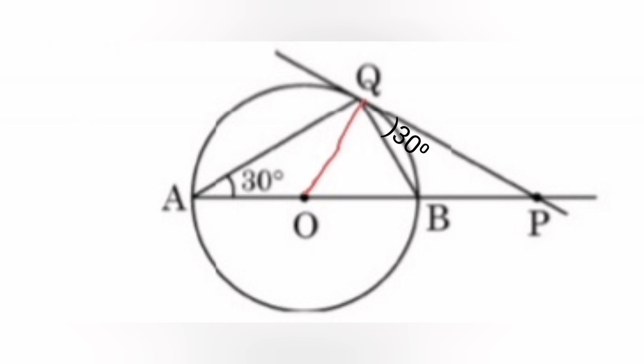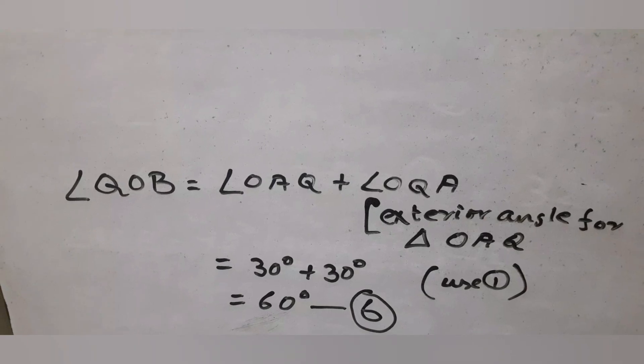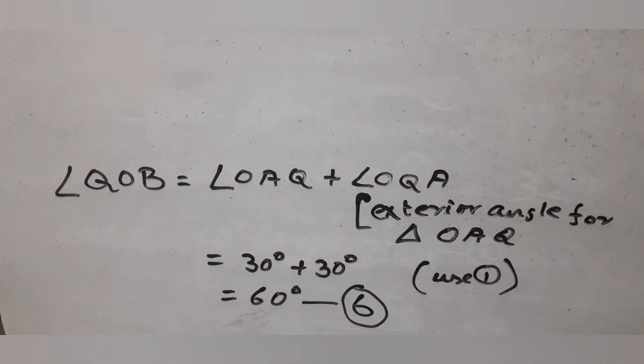We try to find angle QPB. Angle QOB is the exterior angle for triangle OAQ, so angle QOB is 30 degrees plus 30 degrees which is 60 degrees.